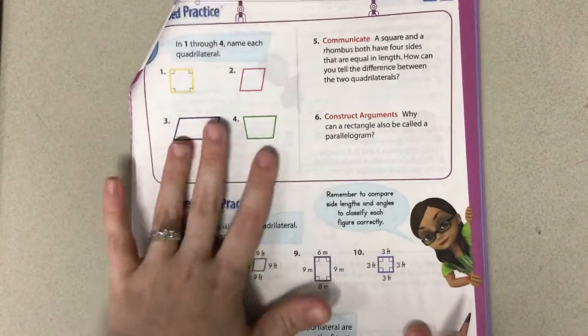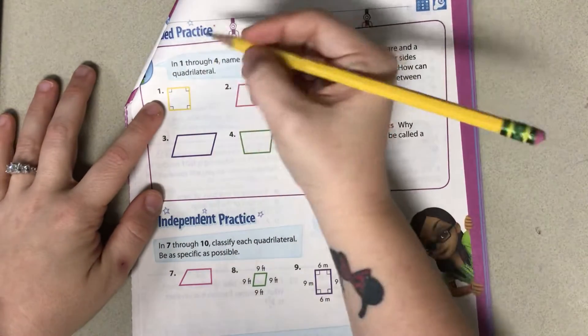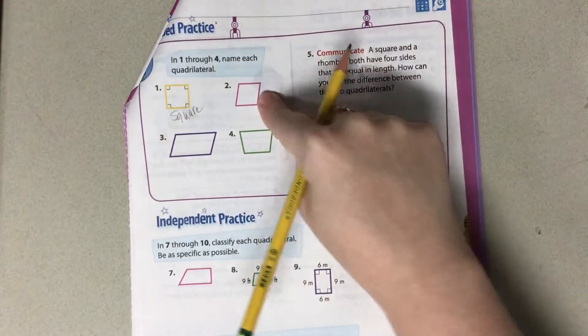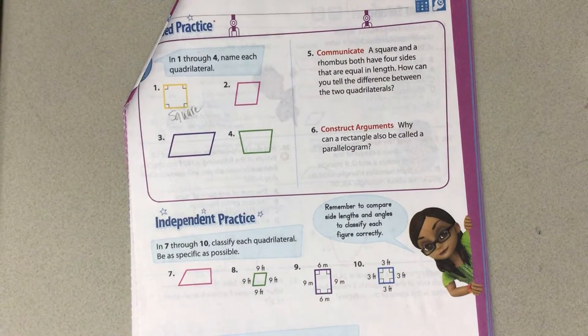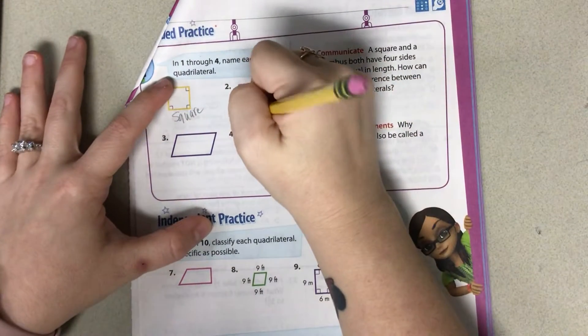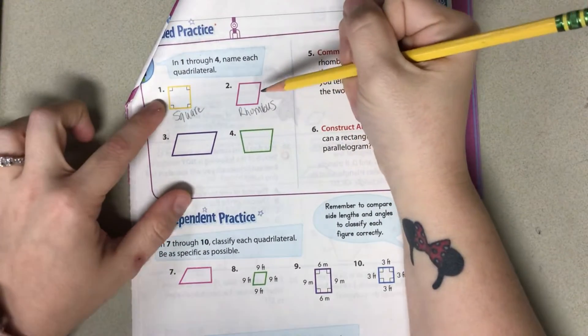Looking at our quadrilaterals, we're going to name each one. This one is going to be a square. This one is going to be a rhombus. As you can see, a rhombus and a square look the same.